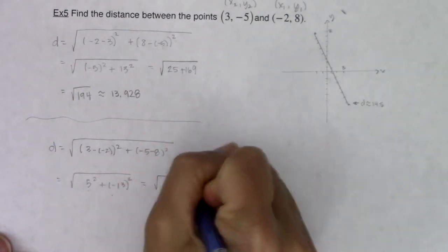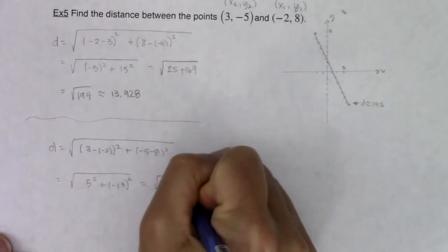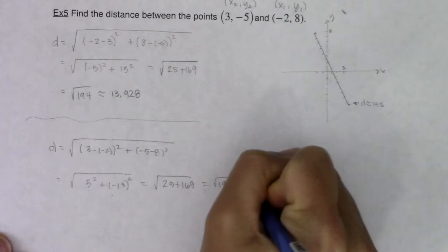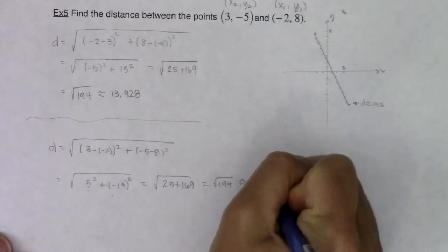So I still get the square root of 25 plus 169, which is the square root of 194, which we just said was 13.928.